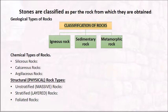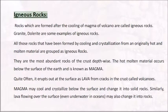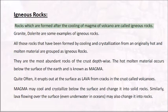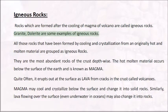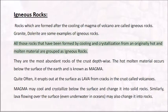Classification of rocks includes igneous rock, sedimentary rock, and metamorphic rock. Igneous rocks are those which are formed after the cooling of magma or volcano. Granite and dolerite are some examples of igneous rocks. All rocks formed by cooling and crystallization from an originally hot and molten material are grouped as igneous rocks.